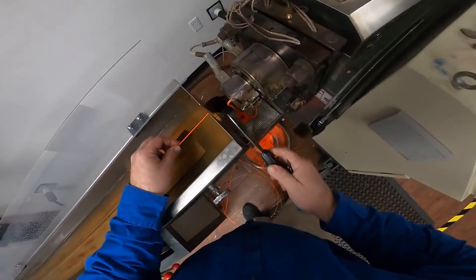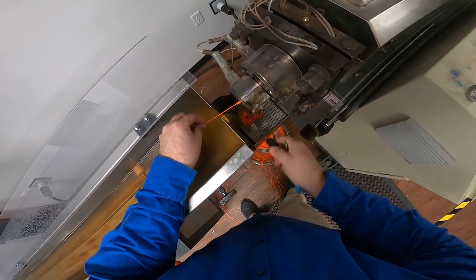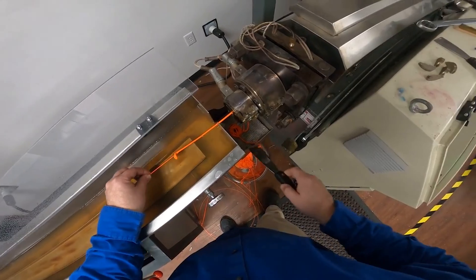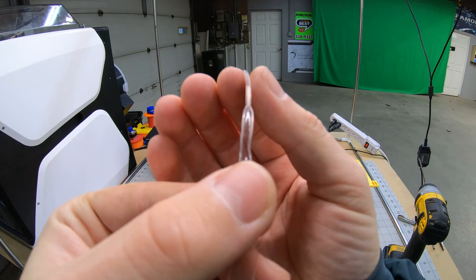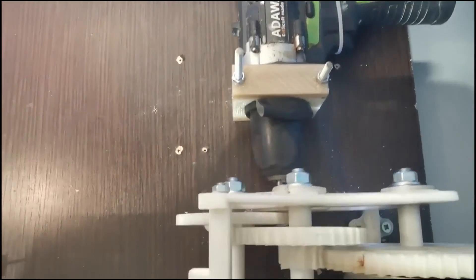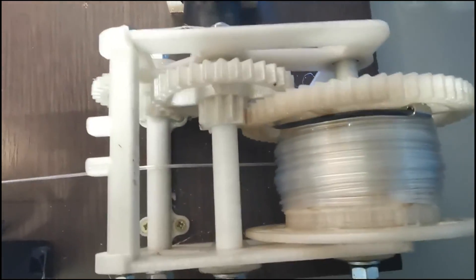When you're extruding plastic, it's usually more in a liquid state, so the temperature, cooling, and speed at which you pull out the plastic determines the diameter. In polstrusion, you're basically just bending the plastic into a new shape, so speed, temperature, and cooling don't matter as much.